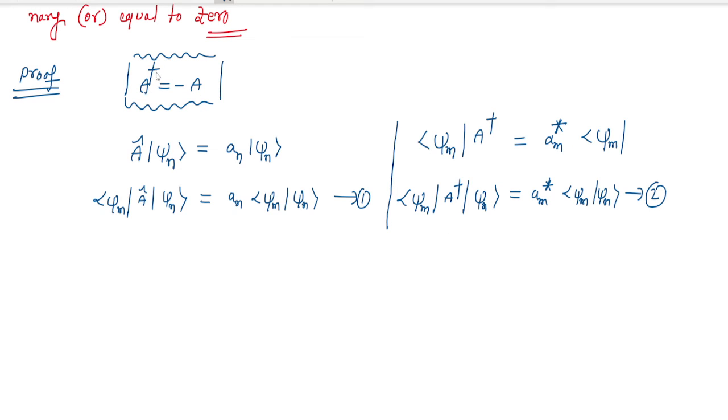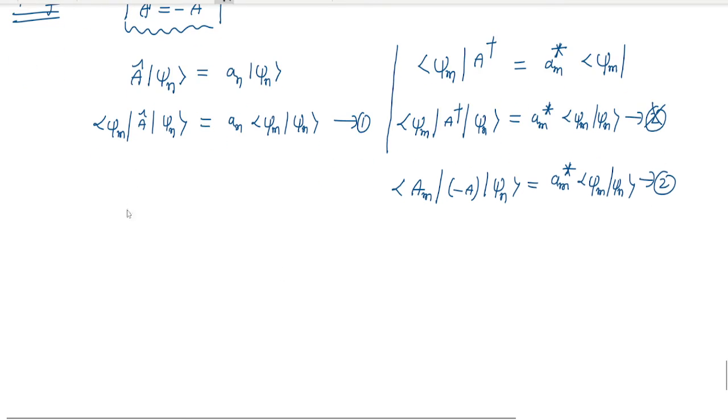â dagger equals, right here I am using minus. In place of this one, if I use minus here: ⟨ψₘ|â†|ψₙ⟩ = -aₘ*⟨ψₘ|ψₙ⟩. This is the equation.